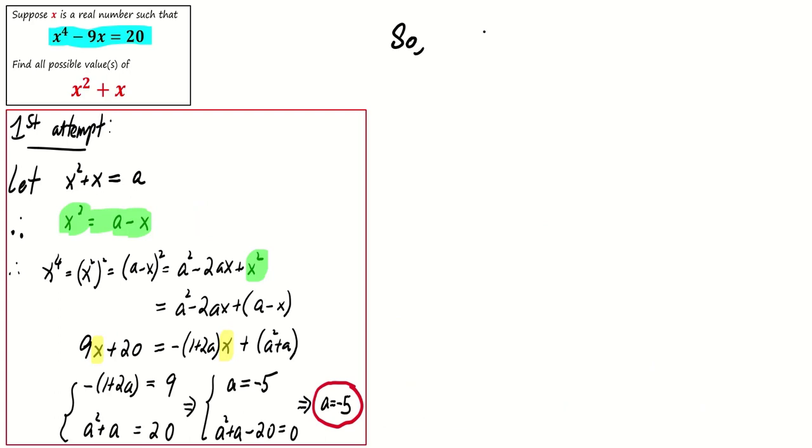However, if a = -5, then x^2 + x = -5. But here's the catch. This implies that x^2 + x + 5 = 0. The discriminant for this quadratic equation is 1^2 - 4×1×5, which is negative.